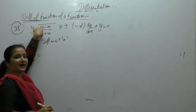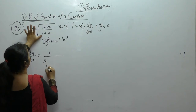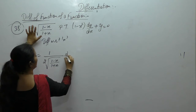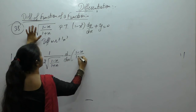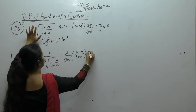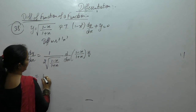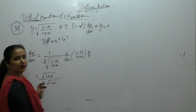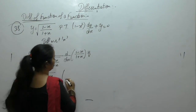Derivative of √x is 1 upon 2√x. Now the derivative of (1 minus x) upon (1 plus x) using the u upon v rule. So we write: 1 upon 2 times √(1 plus x) over √(1 minus x), times v squared.